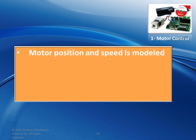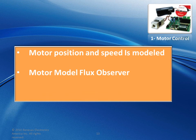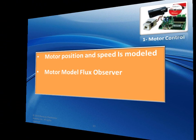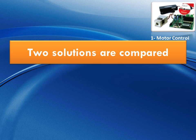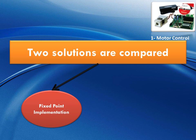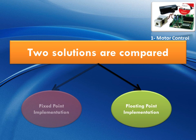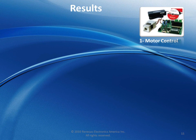Motor positioning and speed is modeled using different techniques. In this example, we have specifically picked the most commonly used technique: the flux observer model for sensorless motor positioning and speed. We have two possible solutions to compare: a solution based on a fixed point implementation, and a solution based on a floating point implementation. Let's see the results of using these two solutions.